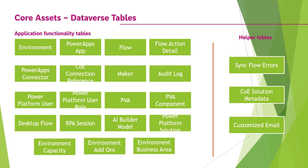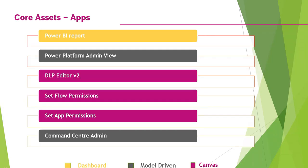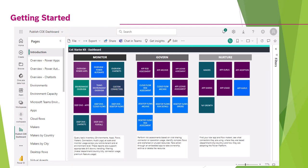Back to the presentation — talking about the core assets. There are different Dataverse tables which come with the core assets: some helper tables related to environments, makers, and flows. There are also different flows which come with the core assets, and different apps — some are model-driven apps, some are canvas apps, and some are dashboards. The Power BI report is a dashboard, whereas the DLP editor, set app permissions, and set flow permissions are canvas apps.